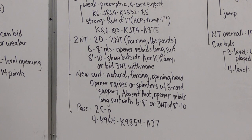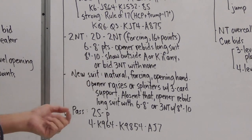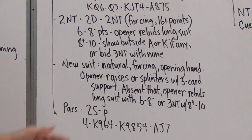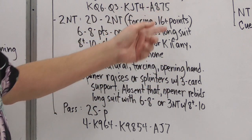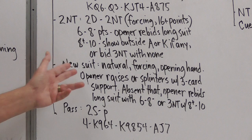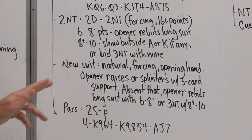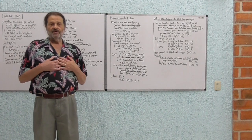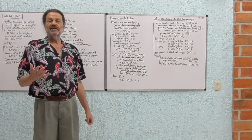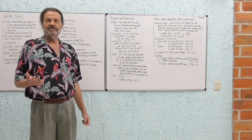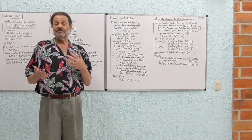Okay, and another option is that responder can bid a new suit. Of course, this is natural. It's going to be showing a five card or longer suit. It's forcing because we've agreed that only raises are non-forcing, and everything else is forcing. And this is a little bit weaker than this two no trump, which showed about 16 points. This one can be done with just an opening hand. And we're exploring for maybe a better place to play. So opener raises or splinters with three card support. What I mean by splinters is bids a third suit. Suppose I open two hearts and you bid two spades. If I've got spade support and shortness in diamonds, I can now bid three diamonds. And we can agree that that's a splinter. It's showing three card support for your suit and side suit shortness.